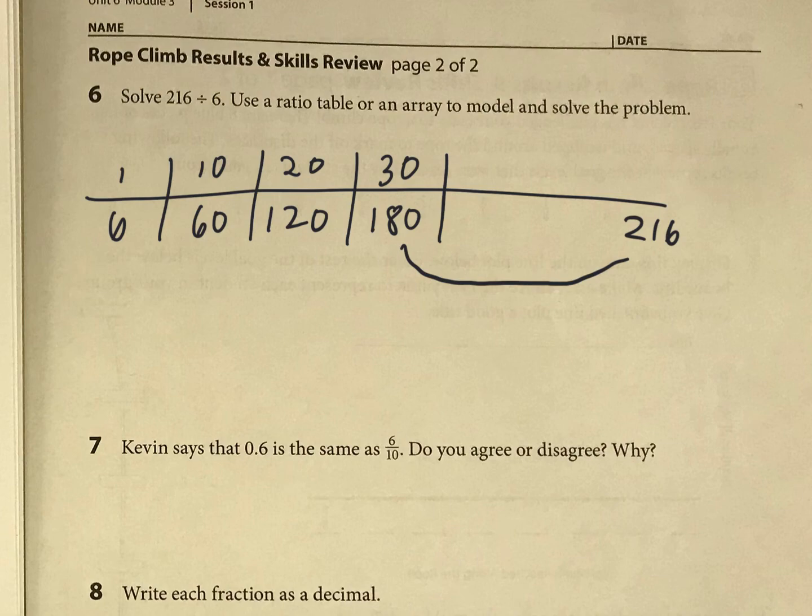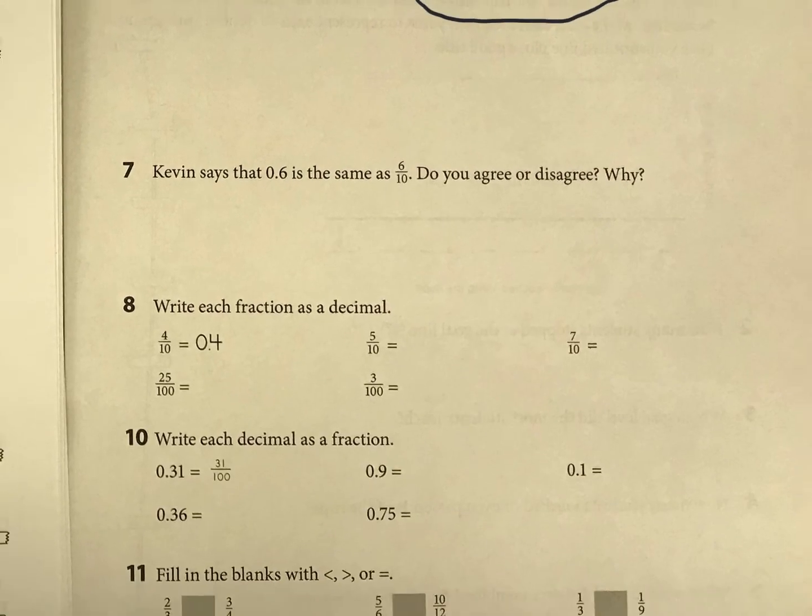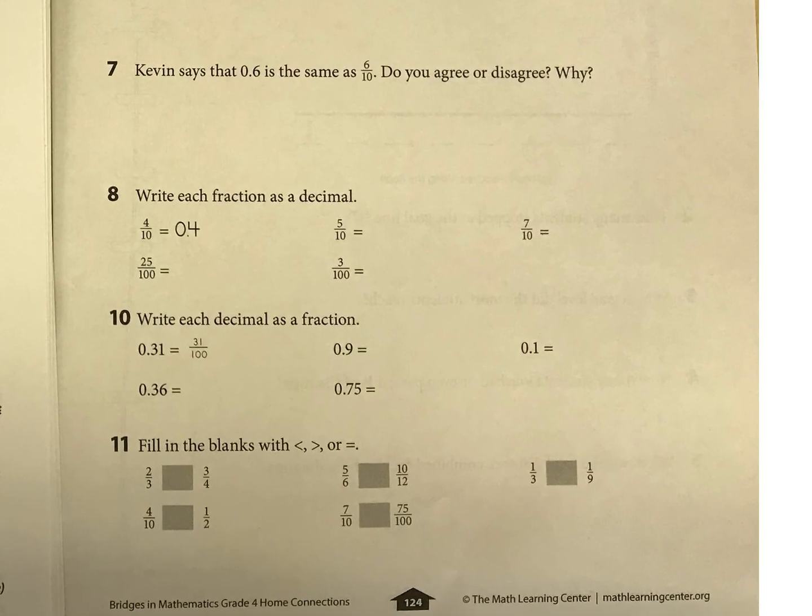Then we have some decimal review in fraction and decimal connections. So four, seven, eight, and nine. Let's just see what you come up with. Are those the same? Do you agree or disagree? And then here, they're giving you an example. Four tenths as a fraction is written like that.